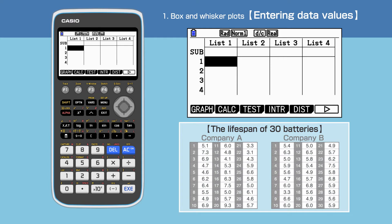We are going to display and compare box and whisker plots in this video. As example data, we will use the lifespan of batteries of two companies A and B.